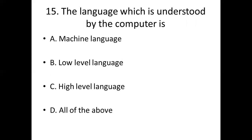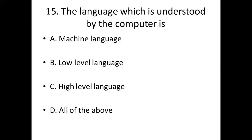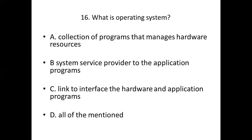Fifteenth bit: The language which is understood by the computer is. Option A: Machine language. Option B: Low level language. Option C: High level language. Option D: All of the above. Answer: Option A, machine language.